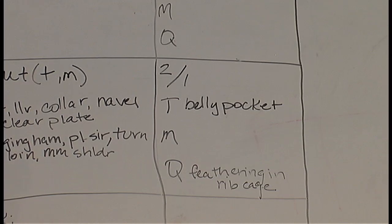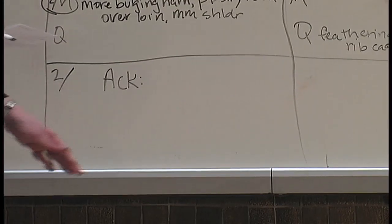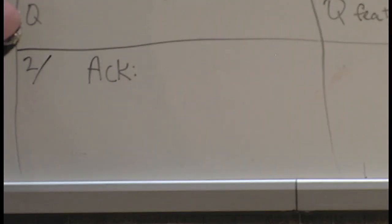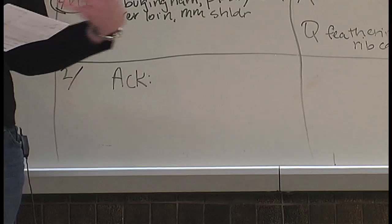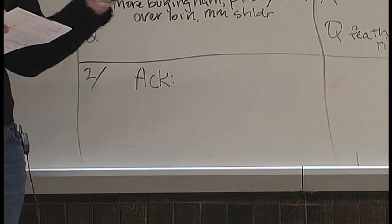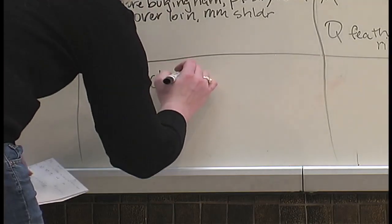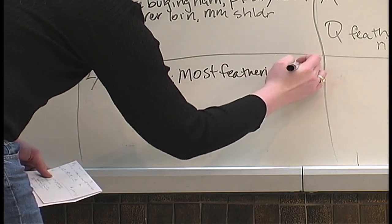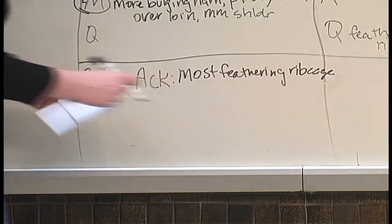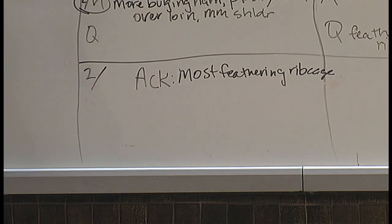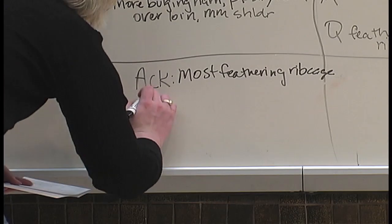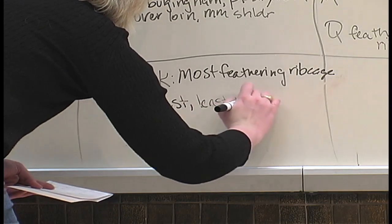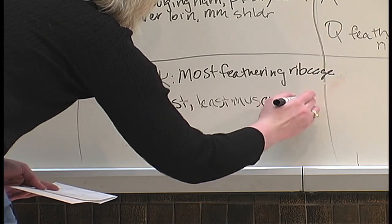Once you complete the bottom pair paragraph, move to your last paragraph of your set of reasons. This is the place where you want to bring out your EST words — the things that really made two go to the bottom of the class. You also want to do your acknowledgement here: bring out something that this carcass possessed the best of out of the rest of them. In this case, two had the most feathering in the rib cage, so you want to put that here. However, two was the fattest, least muscular carcass in the class — put that first.